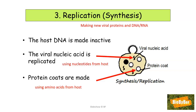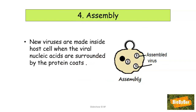You can see clearly that the virus is a parasite — it is using the resources, the nucleotides and the amino acids, belonging to the host. Step four involves assembly. Think of an assembly line producing a car from piecing all the parts together. New viruses are made inside the host cell when the viral nucleic acids — the DNA and RNA — are surrounded by the protein coats.